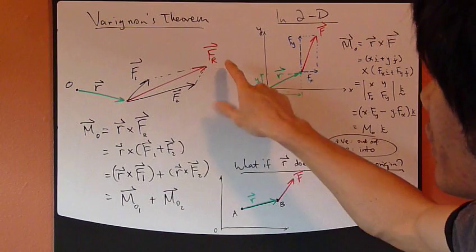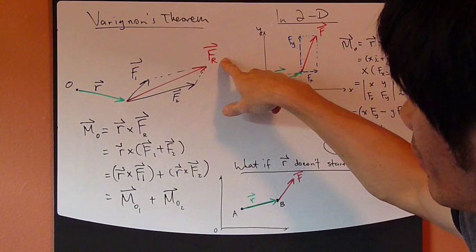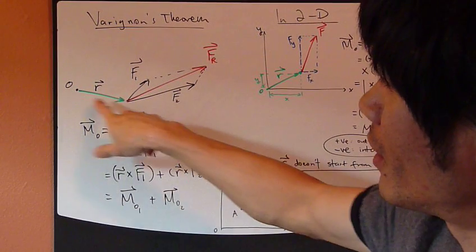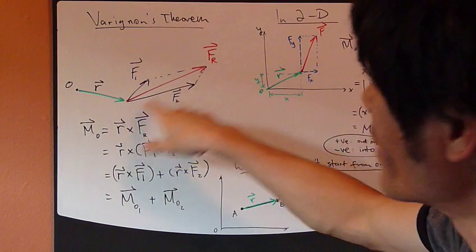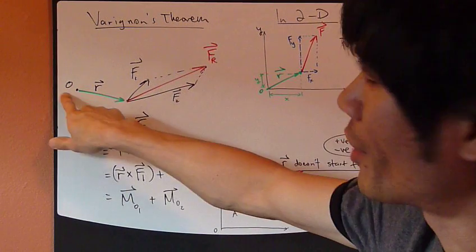Look at this picture right here. Now we have a force, Fr. This force is applied at this point, and I want to take the moment of this force, Fr, about point O.